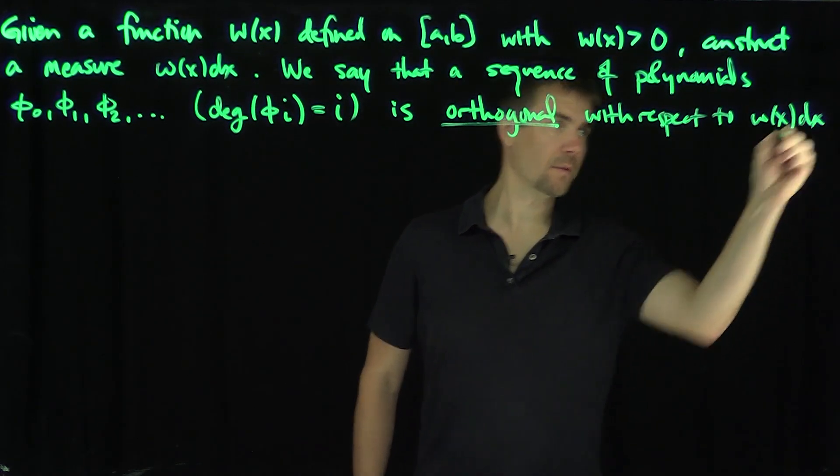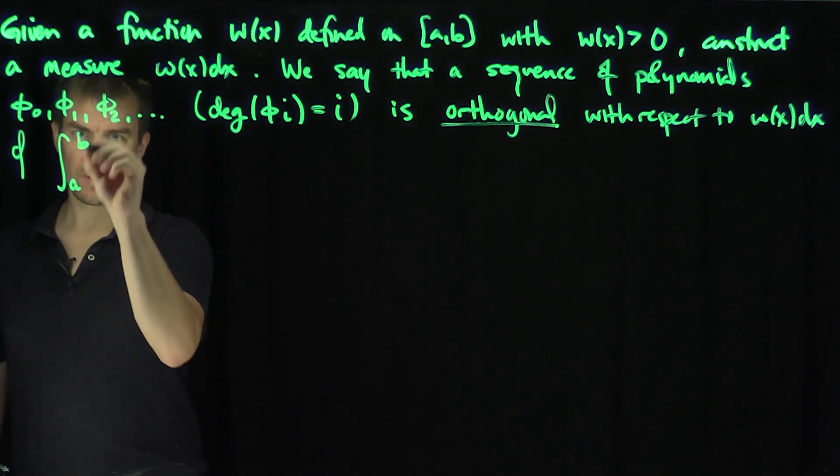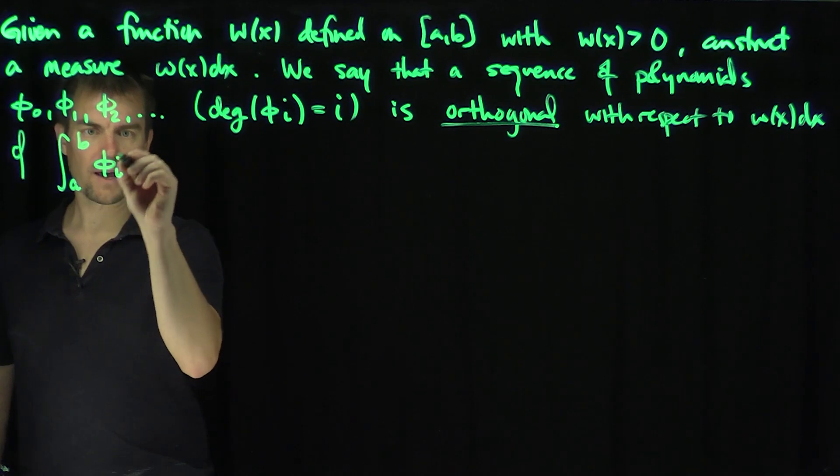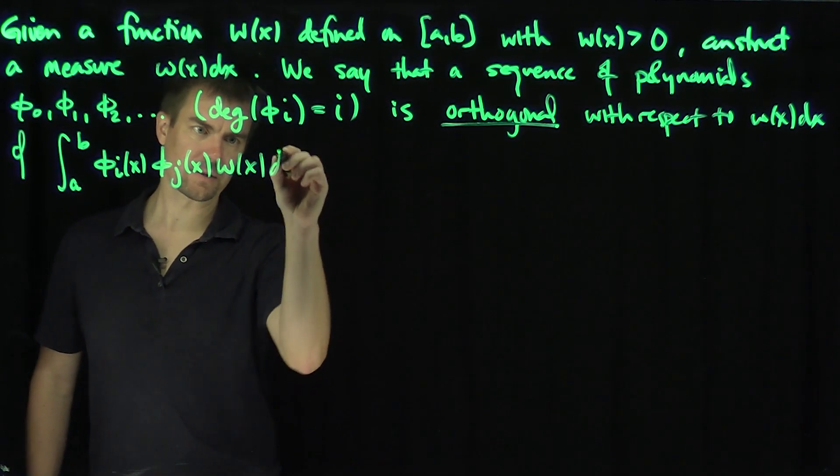with degree of φᵢ being equal to i is orthogonal with respect to w(x)dx if